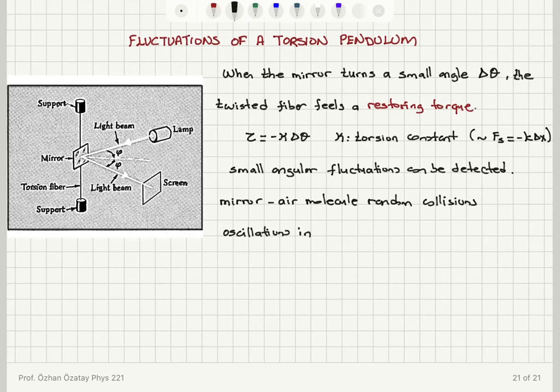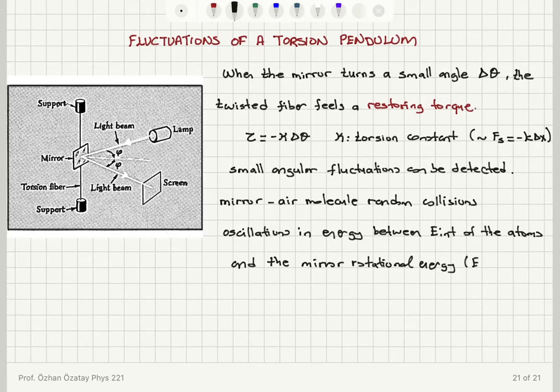And there will be also oscillations in energy between the internal energy of the atoms and molecules and the mirror rotational energy. And what is rotational energy you will remember, rotational energy is given by one over two moment of inertia times angular speed squared, right, so that's like kinetic energy one half mv squared, rotational kinetic energy one half I omega squared.